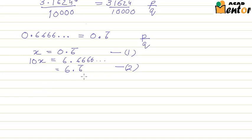Subtracting equation 1 from equation 2 gives us 10x minus x equal to 6.6 bar minus 0.6 bar. This implies 9x is equal to 6.